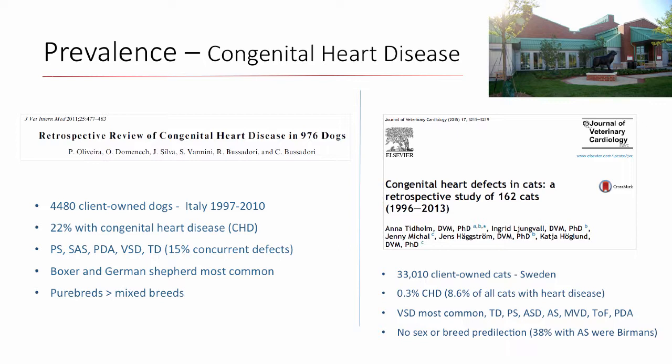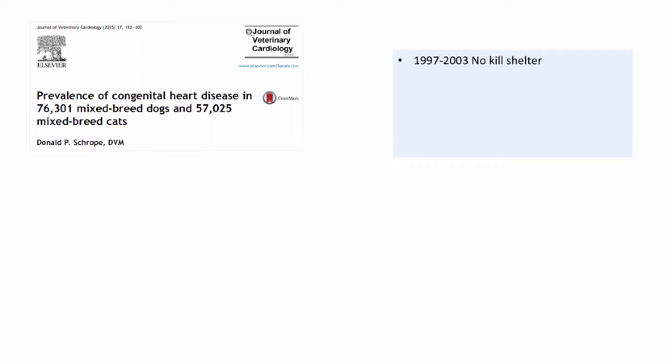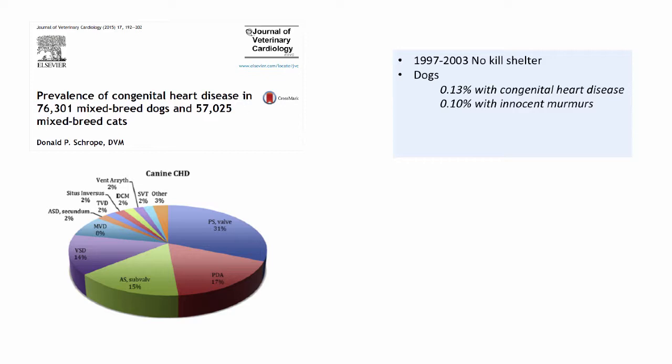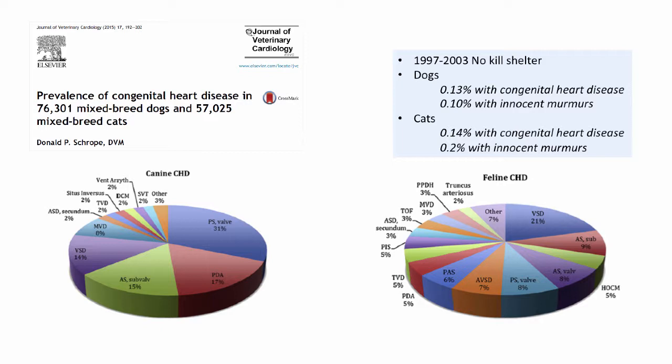This is a nice study with relevance to shelters — it was over a six-year period at a no-kill shelter with an extremely high number of dogs and cats screened by Dr. Shrope. In dogs, there was a relatively low prevalence of congenital heart disease and a similar prevalence of innocent murmurs. The distribution of congenital heart disease was as expected, with the most common being pulmonic stenosis, PDA, SAS, and VSD. In cats, he found a similar low prevalence of congenital heart disease and possibly a higher percentage of innocent murmurs.